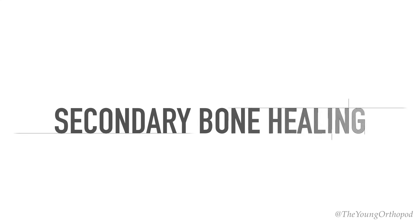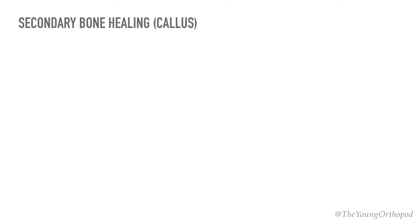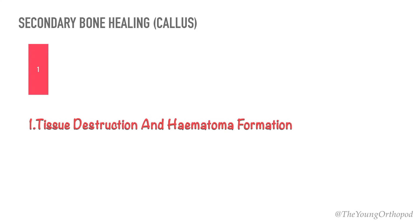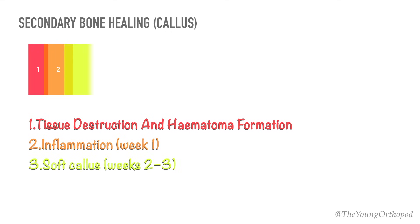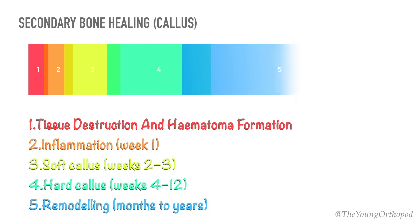Secondary bone healing is the natural form of healing in tubular bones. Under most circumstances, there is some movement at the fracture site and bone heals with a callus in five overlapping phases: tissue destruction and hematoma formation, the inflammatory phase, soft callus formation, hard callus formation, and remodeling of the bone.